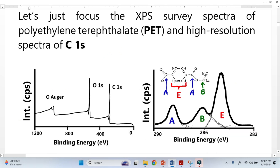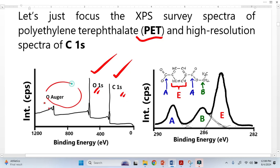This is the standard XPS survey spectra for PET. This is the chemical formula for PET, and we know that there are carbon, hydrogen, and oxygen. XPS cannot detect hydrogen, so the survey spectra give us the information about the elements — carbon is there, oxygen is there. These are the photoelectron peaks, the core electron peaks, and this is the Auger peaks from oxygen.